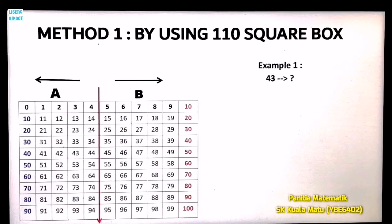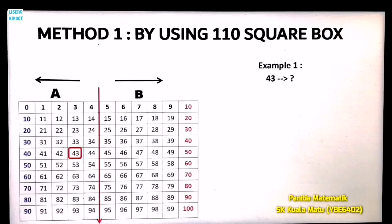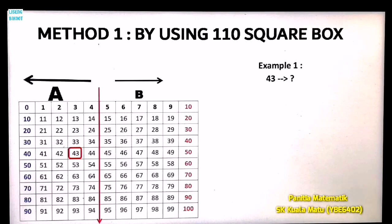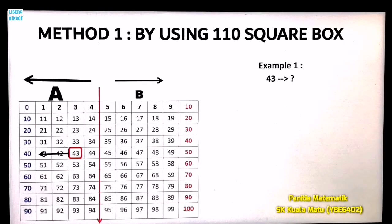Let's try Example 1: round number 43 to the nearest ten. First, find number 43 inside the square box and circle it. Number 43 is in Area A. Now look at the direction of the arrow and draw it — the arrow points to number 40, so we choose 40 as the answer.